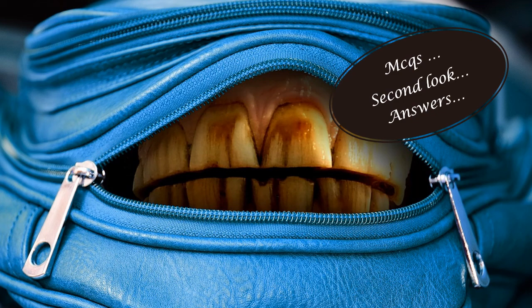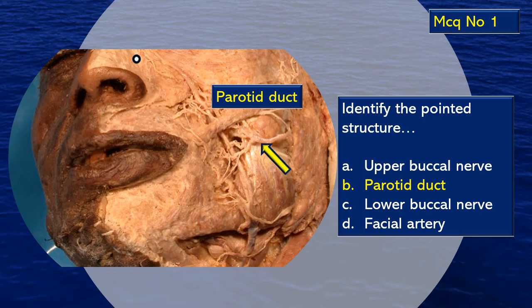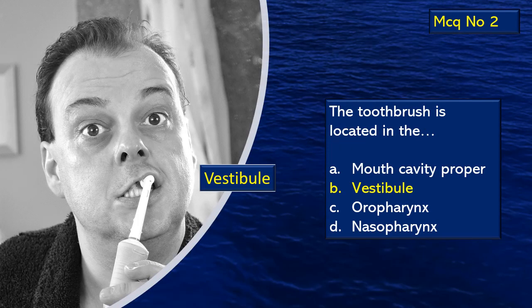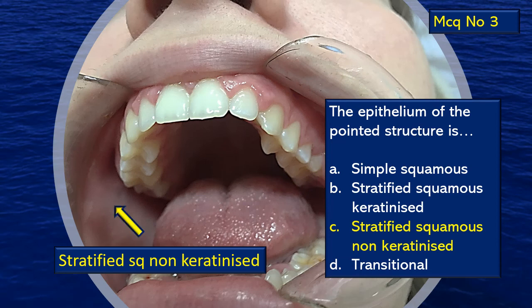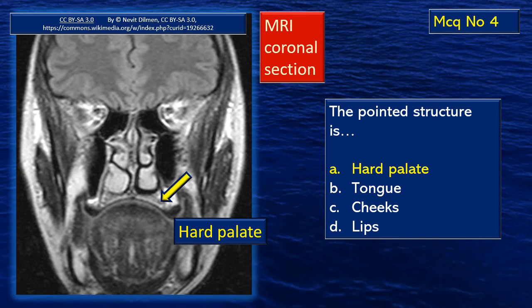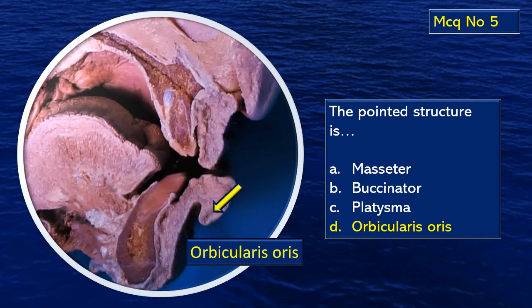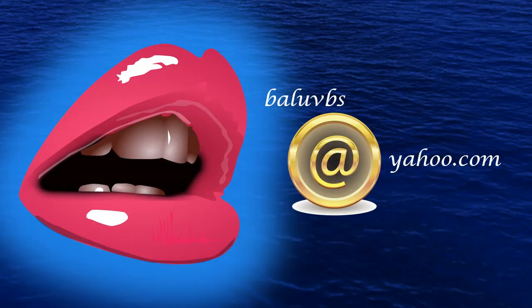It is time for answers. MCQ number 1: that was the parotid duct — item B. MCQ number 2: the toothbrush is located in the vestibule of the mouth. MCQ number 3: the lining epithelium, as repeated many times in the discussion, is stratified squamous non-keratinized epithelium. MCQ number 4: that is the hard palate. MCQ number 5: the core of the lower lip contains the orbicularis oris muscle. That was a discussion on the mouth cavity — introductory concepts. There will be more videos where each component will be discussed in more detail: one on the palate, one exclusively on the tongue, one on the salivary glands, etc.